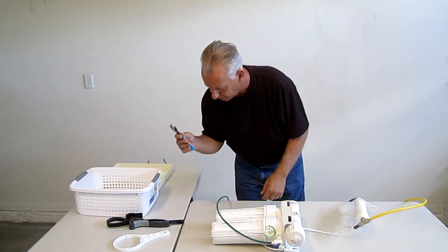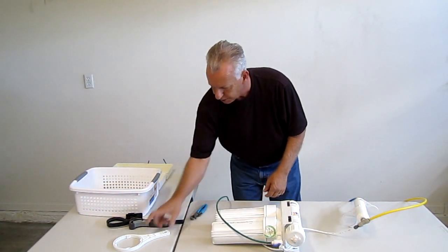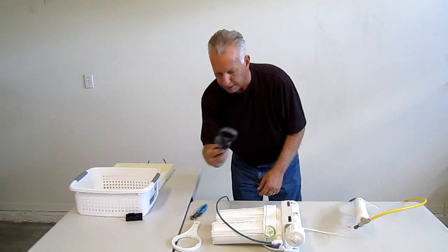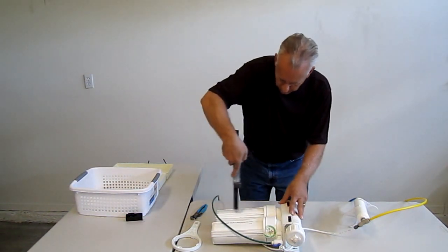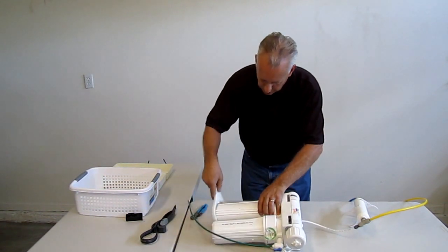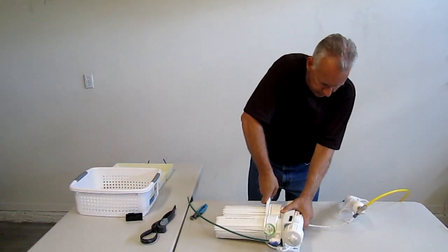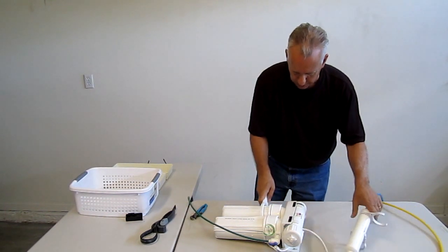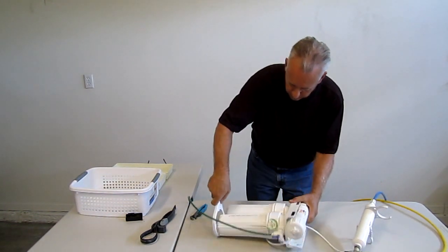We're going to need a pair of channel locks or pliers, filter wrench, or you can use a pipe strap wrench, which you would place on the canisters and turn them loose. We're going to use our filter wrench and crack those loose, give them a good turn. We're just going to do that with each one of them.